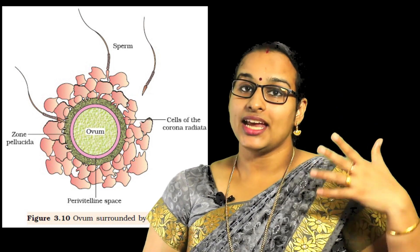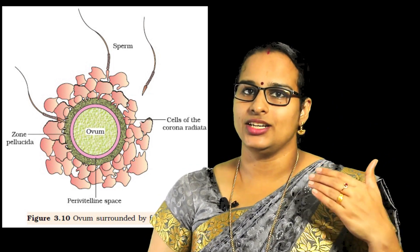After the sperm enters, the second meiotic division of the secondary oocyte continues and is completed. The secondary oocyte is then converted into a second polar body and an ovum. Now we have the ovum and the sperm at the same location, so fertilization happens and zygote formation is the next step.